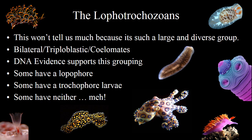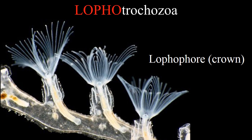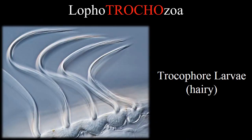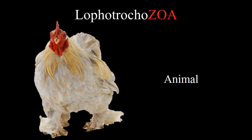Some of the organisms will have a lophophore, which is a crown of cilia, like you see in the bottom left-hand picture. Some have a trochophore larvae. The 'lopho' portion of Lophotrochozoa is in reference to the lophophore, a crown of tentacles that many members of this group possess. The 'trochae' portion is in reference to the trochophore larvae, a hairy larvae that many members may possess. And the 'zoa' portion of the name refers to the fact that these organisms are, in fact, part of Animalia.